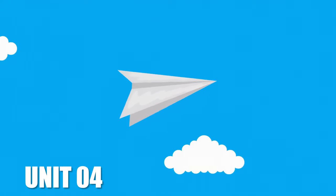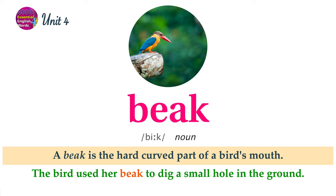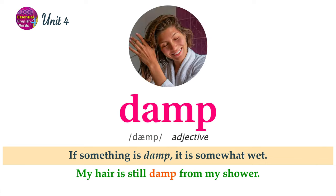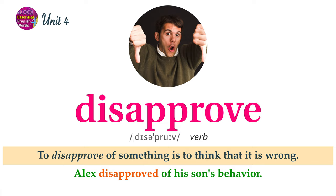Unit 4 Word List. A beak is the hard, curved part of a bird's mouth. The bird used her beak to dig a small hole in the ground. If something is damp, it is somewhat wet. My hair is still damp from my shower. To disapprove of something is to think that it is wrong. Alex disapproved of his son's behavior.